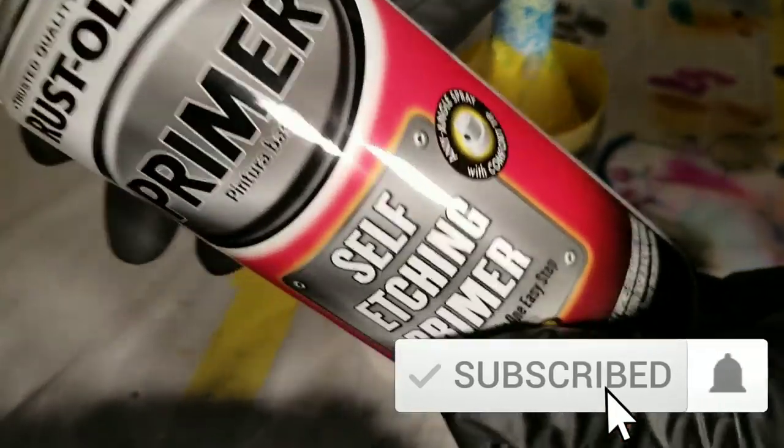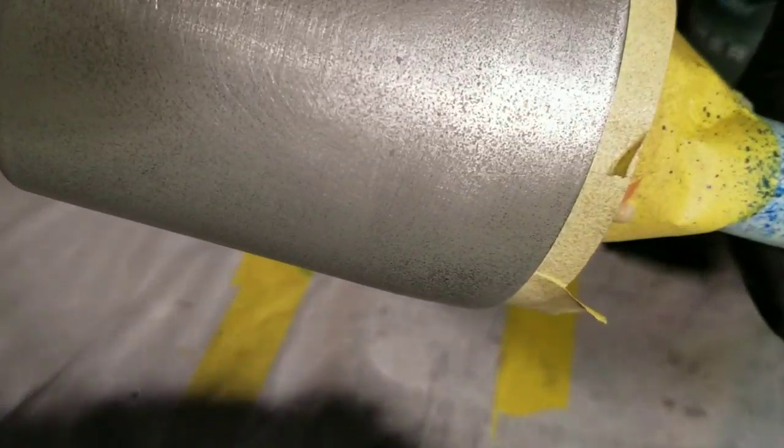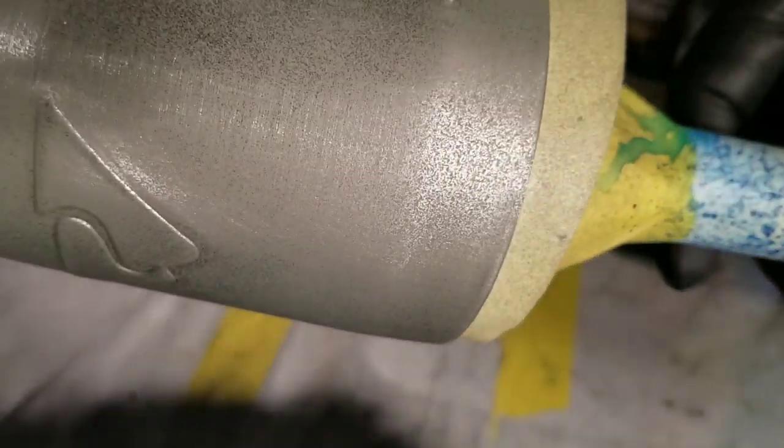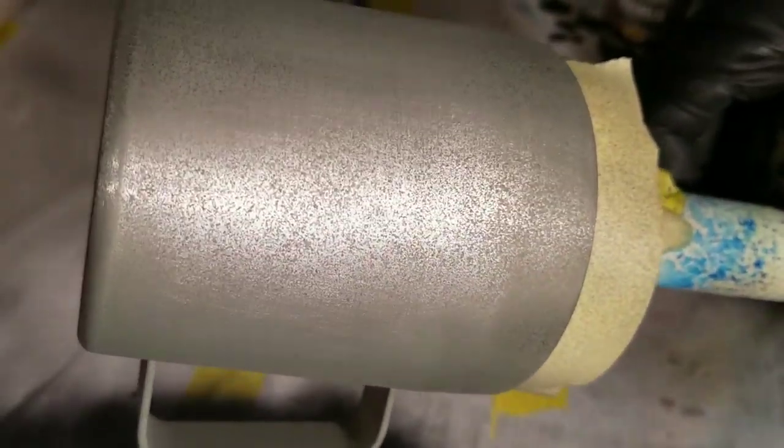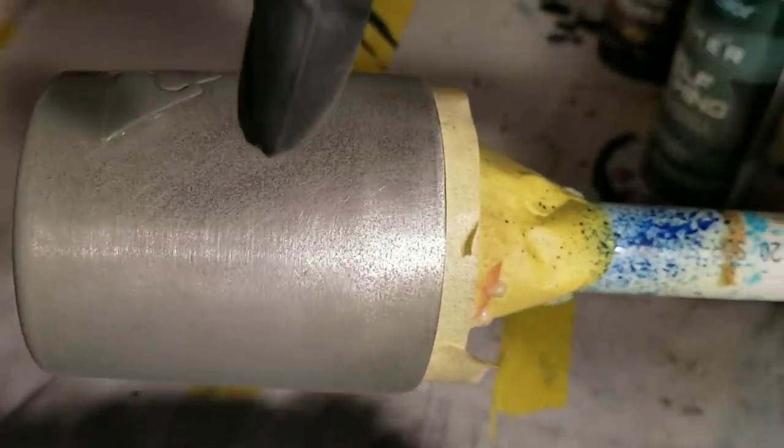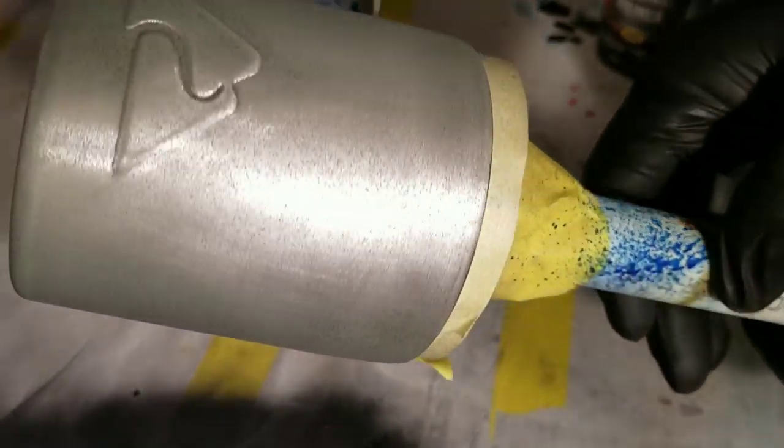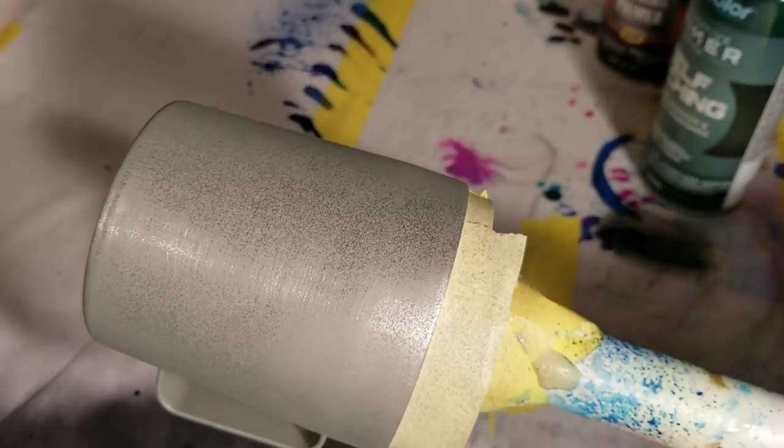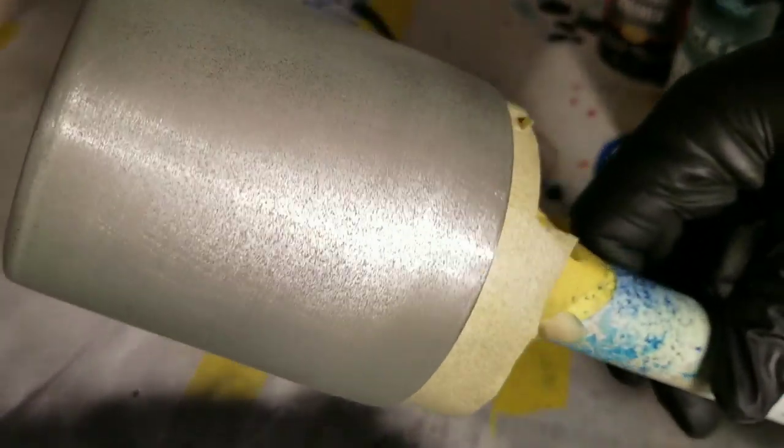Okay, coat number one is done and you can see I just barely misted it to give it something to grab on to for my next coats. Coat number one - you can still see the metal through it. That's really all you're looking to do at this point. With each step, each coat, doing pretty much the same, two maybe three coats like this and that's all you need.